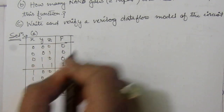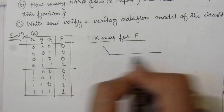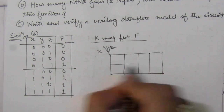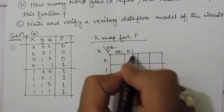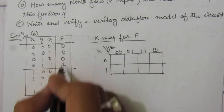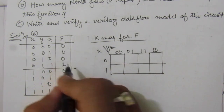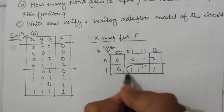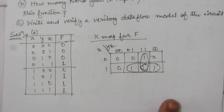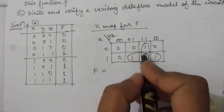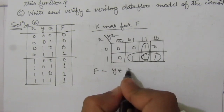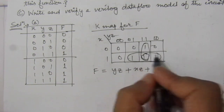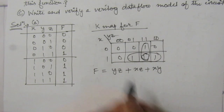Now we make the 3-variable K-map for function F with inputs X, Y, and Z. Filling in the F values — 0,0,0,1,0,0,0,1 and 0,1,1,1 — we can combine the groups to get 3 product terms. From the first group we get YZ, from the second group XZ, and from the third group XY. So the Boolean equation is F = YZ + XZ + XY.